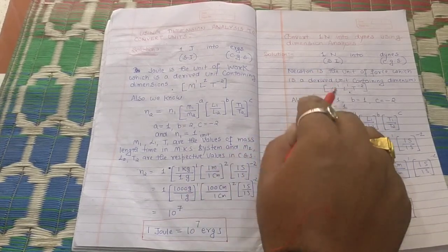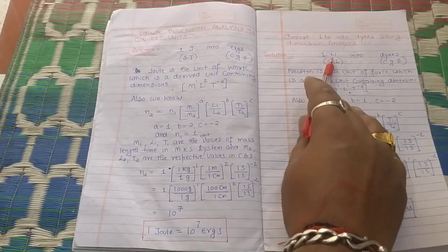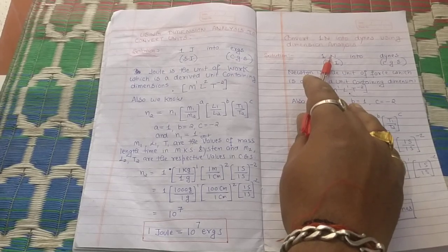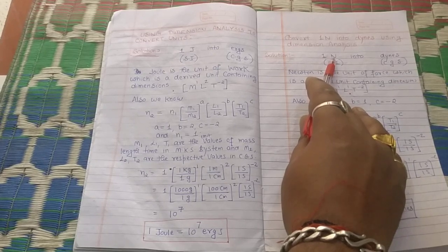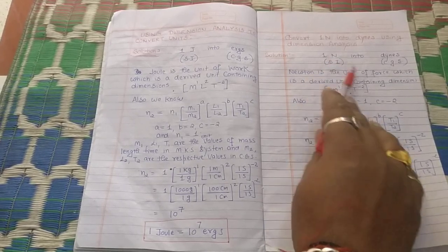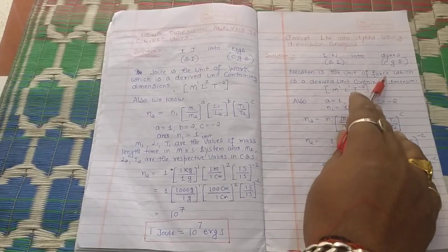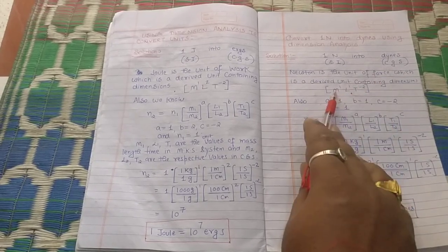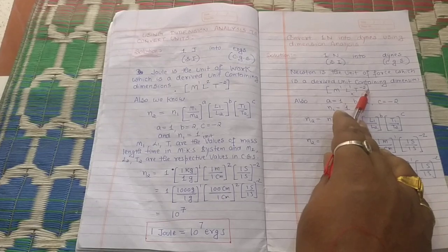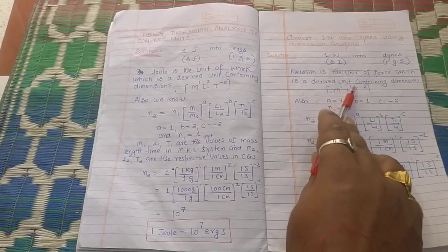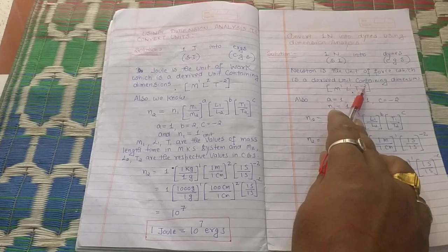Now we will move on to the second question. We need to convert Newtons into dynes using dimension analysis. We know that Newton is the SI unit of force. The dimension of force is M¹L¹T⁻². So here we are getting A = 1, B = 1, C = -2.